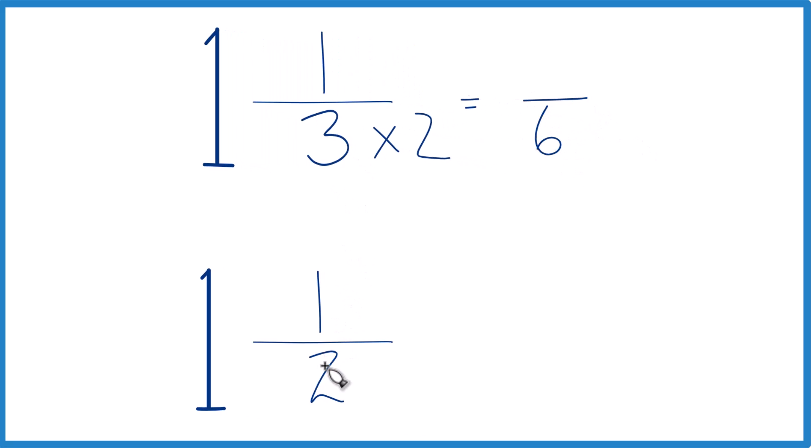Down here, I'm going to multiply 2 times 3. Because when I do that, I get 6. And now I have the same denominators.